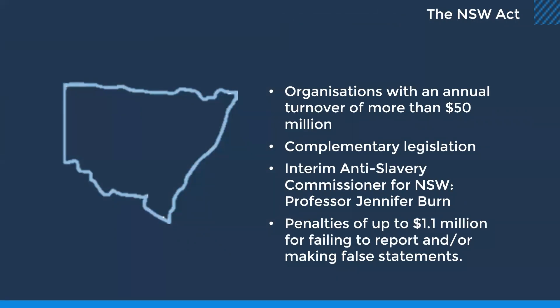The New South Wales Modern Slavery Bill passed in June 2018 is intended to cover public and private sector organisations with a turnover of more than $50 million operating with staff in New South Wales. The Act has not yet commenced. On the 6th of August 2019, the Legislative Council Standing Committee on Social Issues announced an inquiry into the Act. Key differences from the Commonwealth Act include an interim anti-slavery commissioner for NSW — Professor Jennifer Byrne — and penalties of up to $1.1 million for failing to report or making false statements.